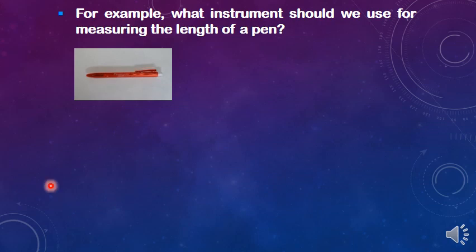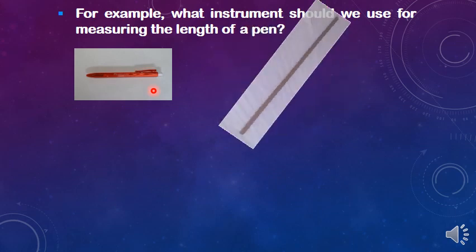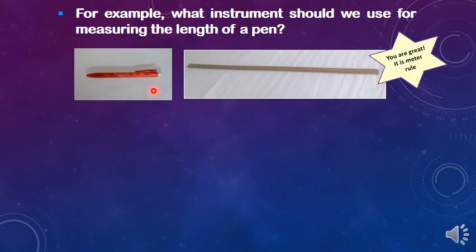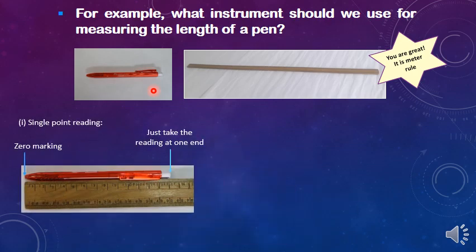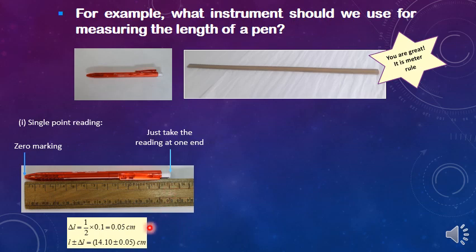For example, what instrument should we use for measuring the length of a pen? It is the meter rule. You may measure the length of the pen using single-point reading. When you place one end of the pen at the zero marking, you just take the reading at the right end of the pen. The uncertainty of single-point reading is half of the smallest division of the meter rule, which is 0.05 cm. Therefore, the length of the pen is recorded as 14.10 ± 0.05 cm.